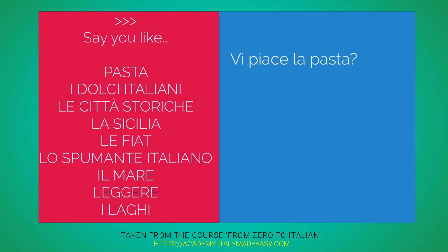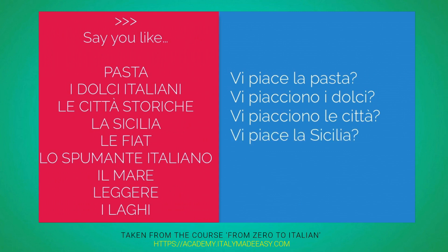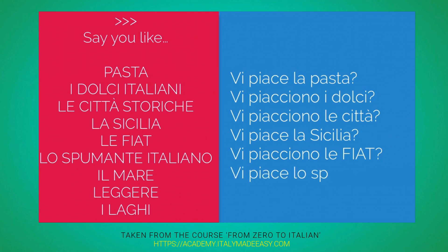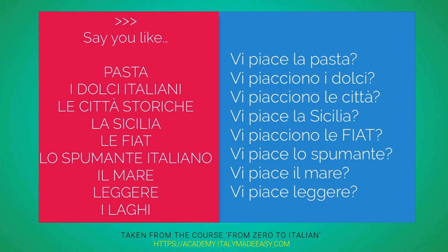In one way Italian is definitely more complicated when it comes to this, but once you get it, it's actually easier because all you're changing is that one little pronoun that says to whom that thing is pleasing. Vi piacciono i dolci italiani? Vi piacciono le città storiche? Vi piace la Sicilia? Vi piace lo spumante italiano? Vi piace il mare? Vi piacciono i laghi?